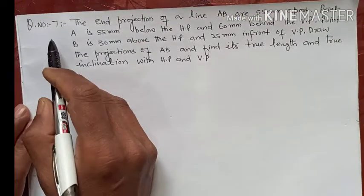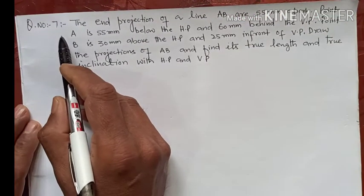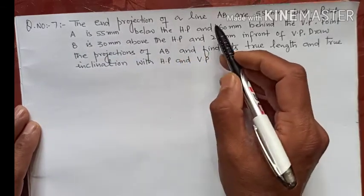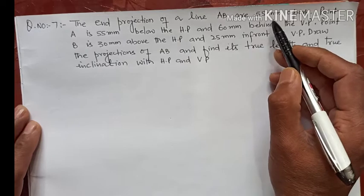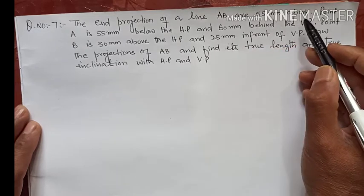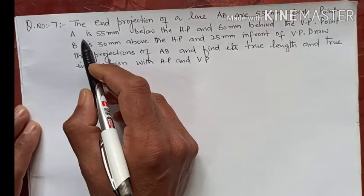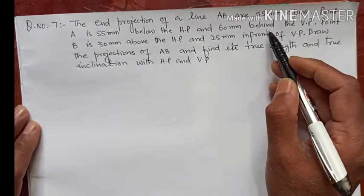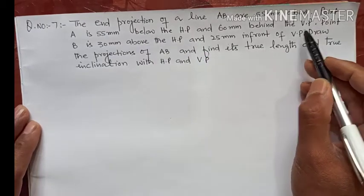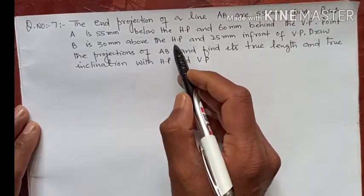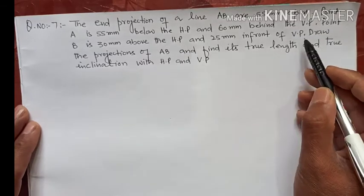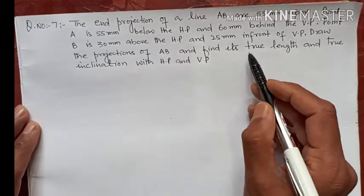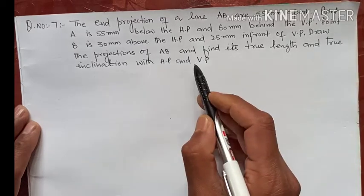Today we will do one more question, question number seven on projection of a line. The question is: the end projections of a line AB are 55 mm apart. Point A is 55 mm below the HP and 60 mm behind the VP. Point B is 30 mm above the HP and 25 mm in front of VP. Draw the projections of AB and find its true length and true inclination with HP and VP.